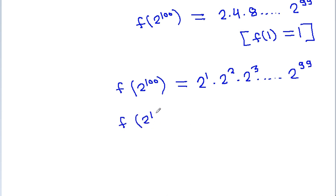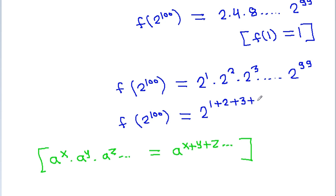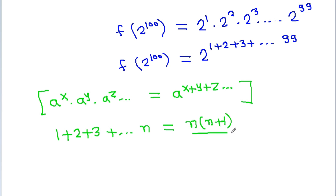And f(2^100) will be equal to — since a^x times a^y times a^z and so on is equal to a^(x+y+z), this will be equal to 2^(1+2+3+...+99). And 1 plus 2 plus 3 plus up to n is equal to n times (n+1) by 2.